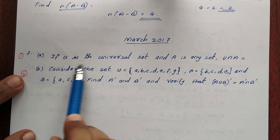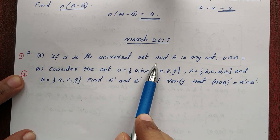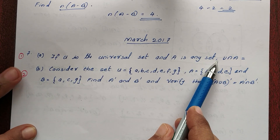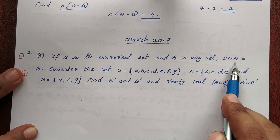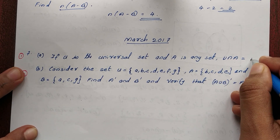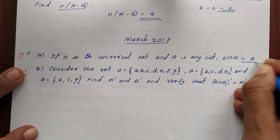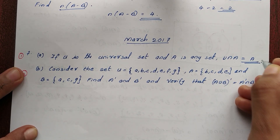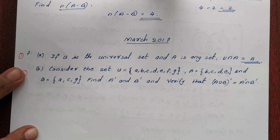If U is the universal set and A is any set, then U intersection A is equal to A. We have already discussed it.